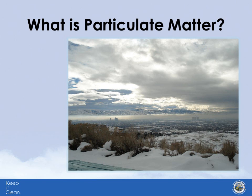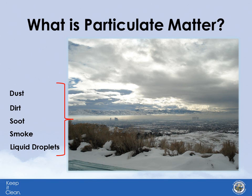So what exactly is particulate matter? It's a pollutant found in the air that includes dust, dirt, soot, smoke, and liquid droplets. Particulate matter, also known as PM, is a year-round pollutant, but is of greater concern — especially in our region — during the winter months due to temperature inversions like the one shown in this photo.